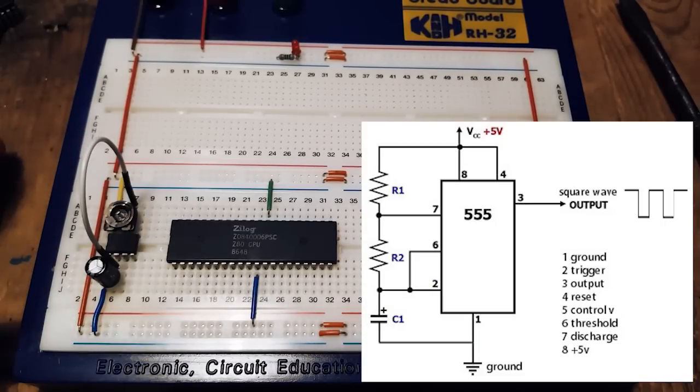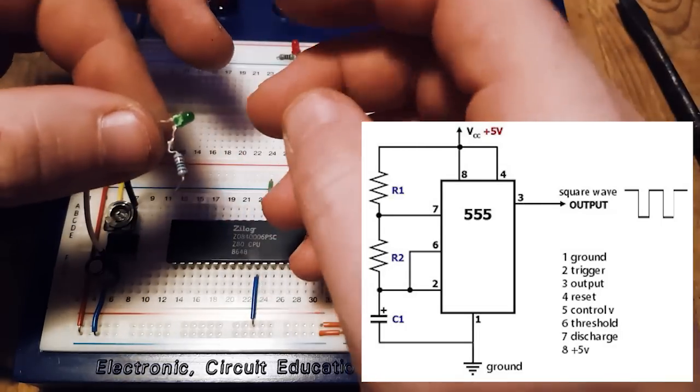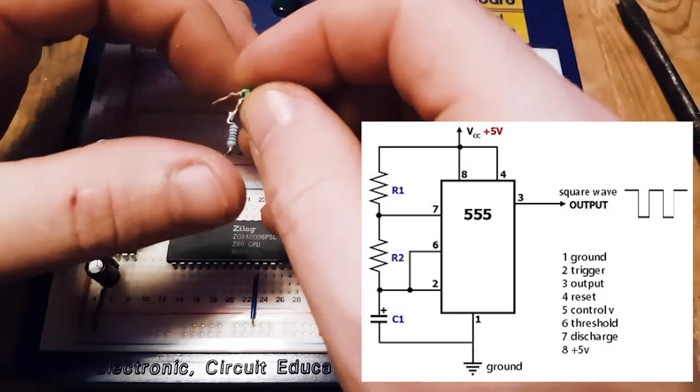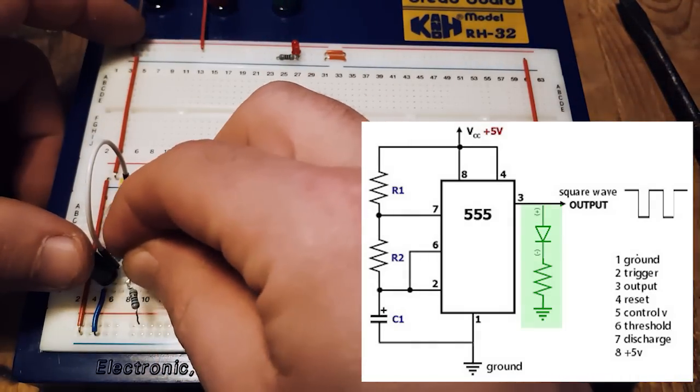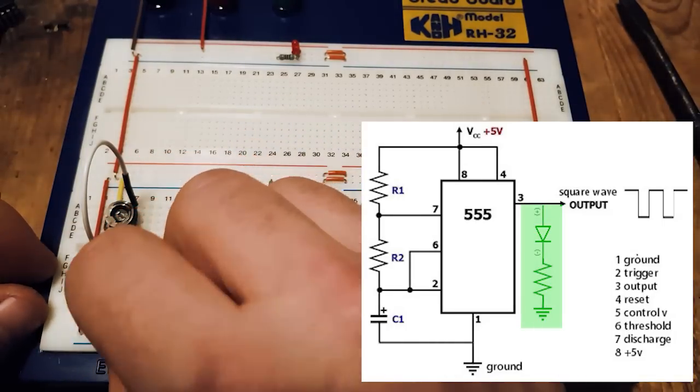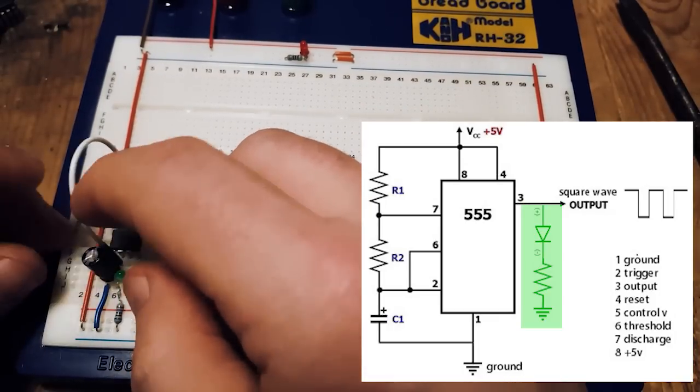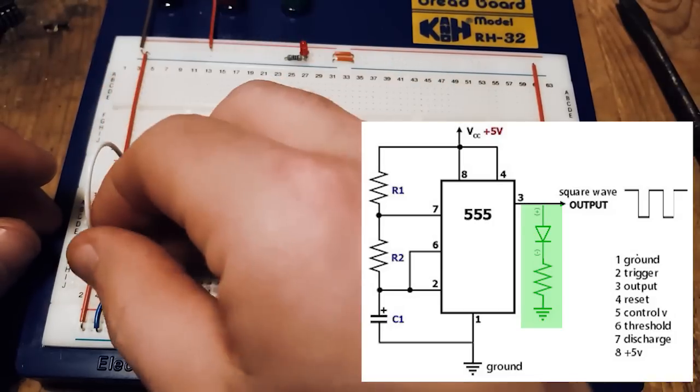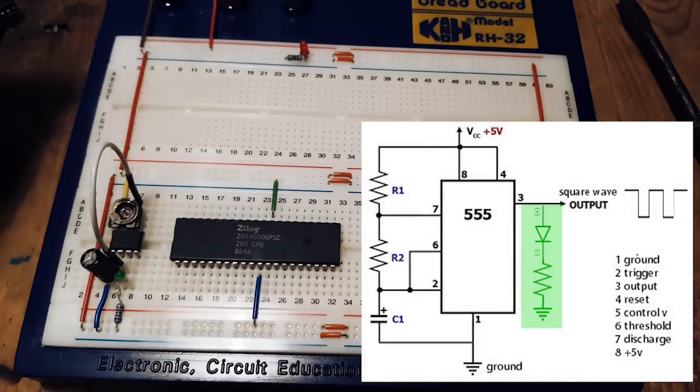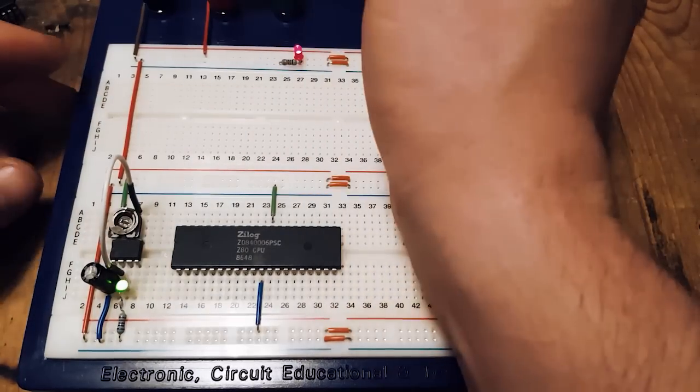So now we should have a working 555. To check that it's working, we're going to connect the, we're going to use something similar to this setup. It's a small LED. I picked a green LED connected to a 220 ohm resistor connected to ground. Assuming everything went well, essentially we should have a flashing LED at a regular interval. So we're going to check that. I'm going to power my board. Hopefully. There you go. We have a clock signal.